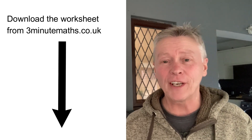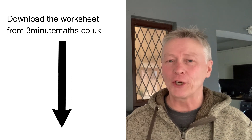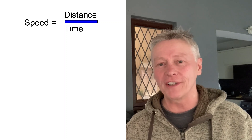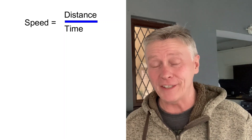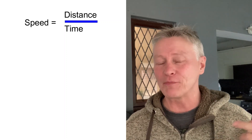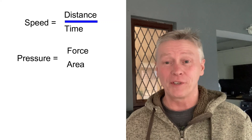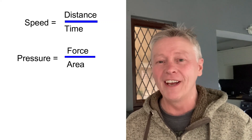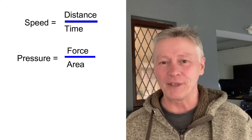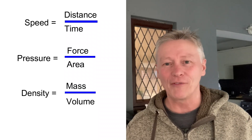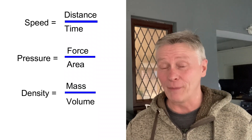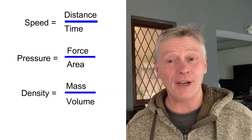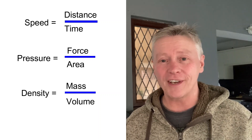In this video we're going to be looking at compound measures. There are three formulas you need to know: speed equals distance divided by time; pressure equals force divided by area; and density equals mass divided by volume. You need to remember these three formulas to work through this, which is aimed at about grade 5 GCSE.